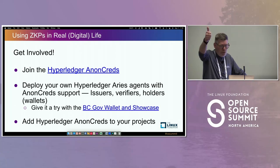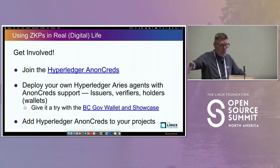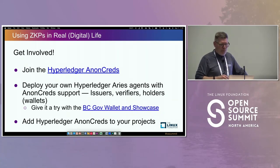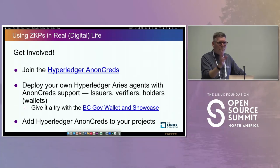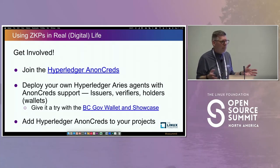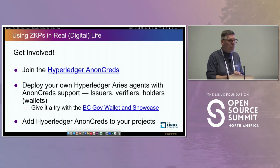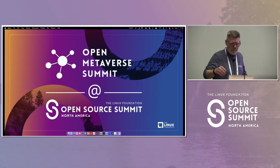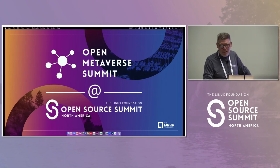Join Hyperledger AnonCreds. You can deploy your own agents using Hyperledger Aries. You can get a wallet — like the one the Government of British Columbia mentioned in the keynote — downloadable from the app stores, and there are others as well. See how it fits into your own project. I'm also doing a workshop on May 31st on how Hyperledger can be used — actually playing around with credentials — a remote workshop with Hyperledger. Thanks for attending.